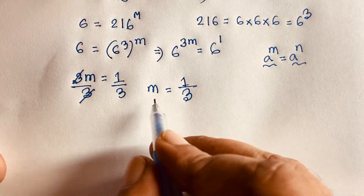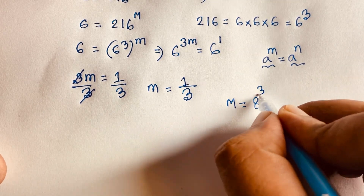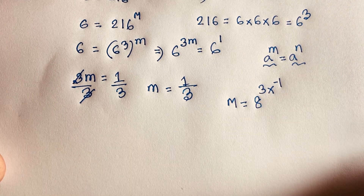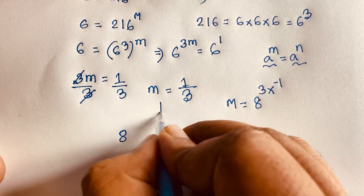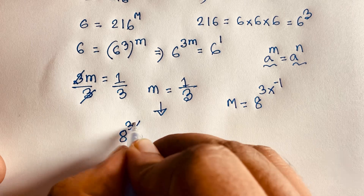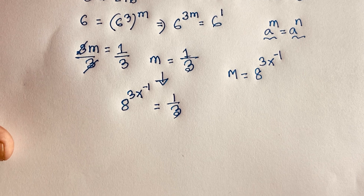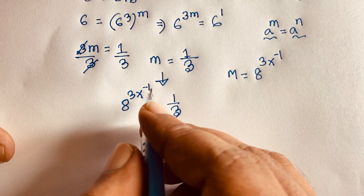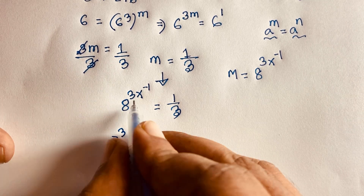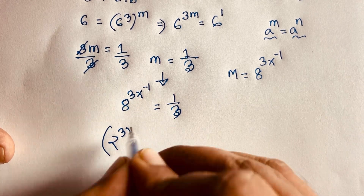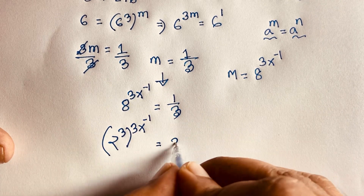Now, recall that m is equal to 8 to the power 3x minus 1. So putting this value back, we have 8 to the power 3x minus 1 equals 1 over 3. Now, 8 equals 2 to the power 3 — since 2 times 2 times 2 equals 8. So it becomes 2 to the power 3, whole to the power 3x minus 1, equals 1 over 3.